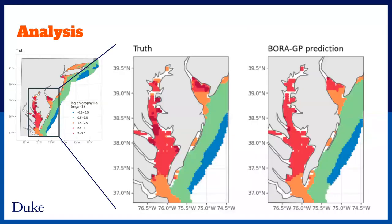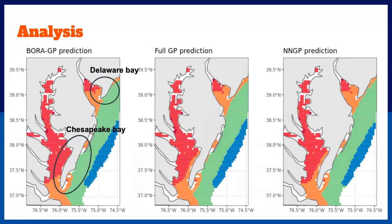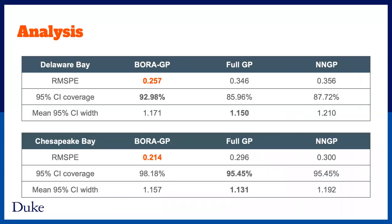Here I show you prediction results of chlorophyll A from Bora GP. We see the truth and the Bora GP prediction are quite alike. The full GP or NNGP, however, inappropriately smooth over barriers, especially around Delaware Bay and Chesapeake Bay. That's why we have wrong orange points here and here. For Delaware Bay and Chesapeake Bay, Bora GP reduces RMSPE down to 40% compared to the other two. It also shows reasonable credible interval coverage and width consistently across regions.